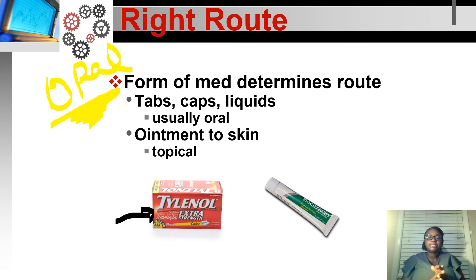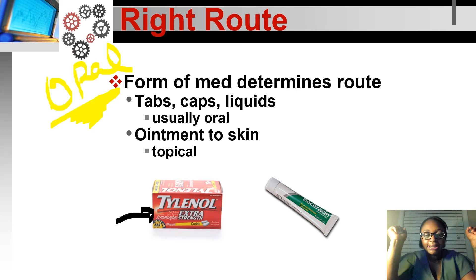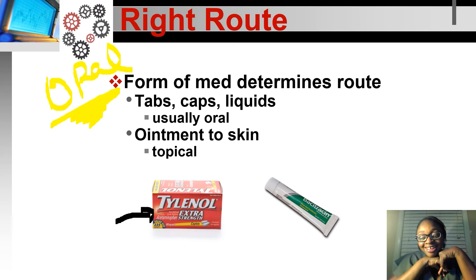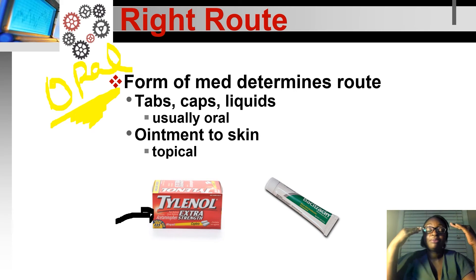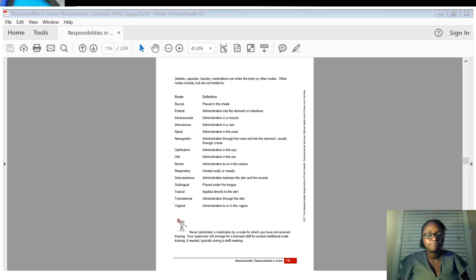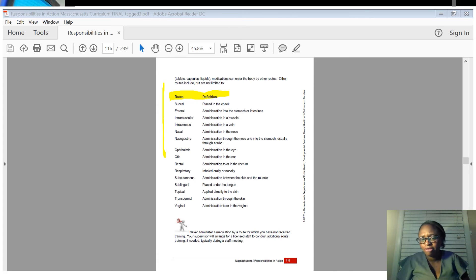Errors with routes are uncommon, but when they do occur they're mostly with eye drops or ear drops — for example, confusing which eye to use for glaucoma drops, or mixing up ear drops. Page 116 in your book lists all the routes, though you don't need to memorize them — it's there for reference.